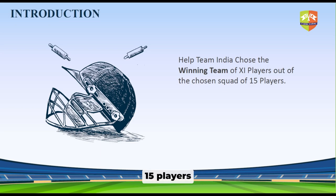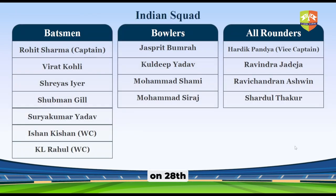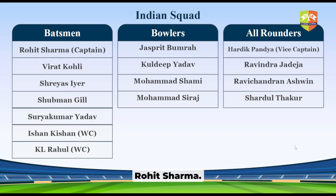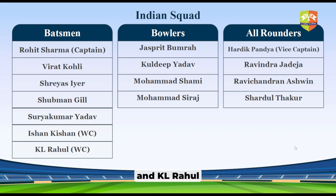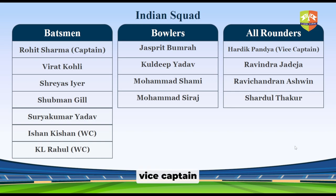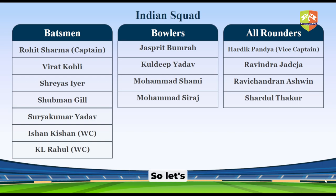The squad of 15 players was announced recently on 28th of September, which contains 7 batsmen including captain Rohit Sharma. We have two wicket keepers, Ishan Kishan and KL Rahul, to choose from. We have all-rounders like Hardik Pandya as vice captain and Ravindra Jadeja, and we have none other than Virat Kohli.